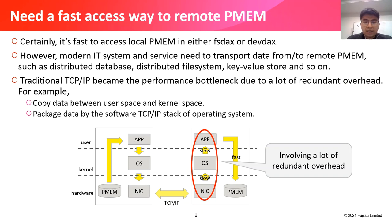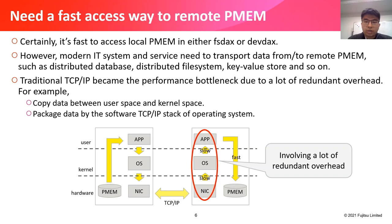However, modern IT systems and services need to transport data from or to remote P-memory, such as distributed databases, distributed file systems, key-value stores, and so on. Traditional TCP/IP becomes a performance bottleneck due to a lot of redundant overhead — for example, copying data between user space and kernel space, and packaging data through the software TCP/IP stack of the operating system. In this case, we need a faster access way to remote P-memory.